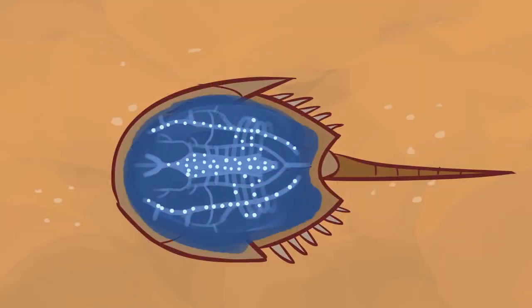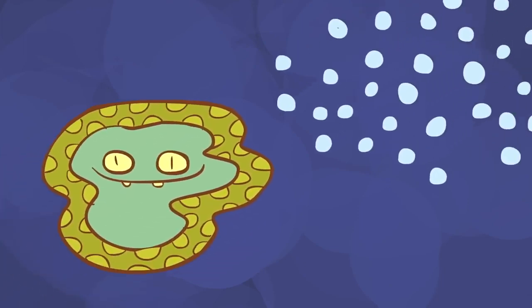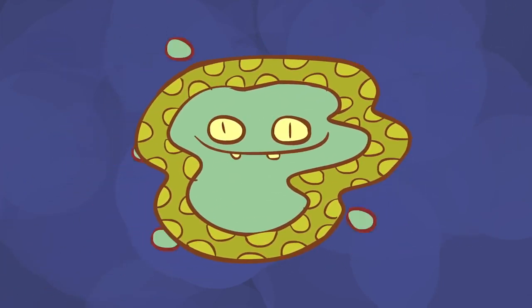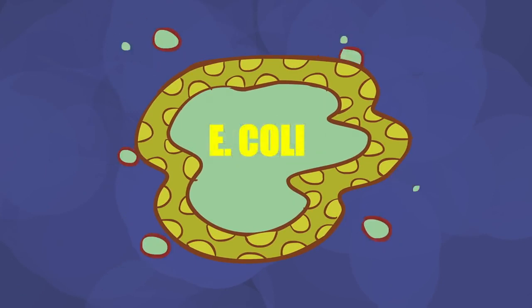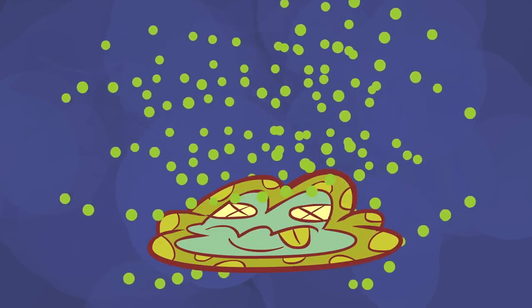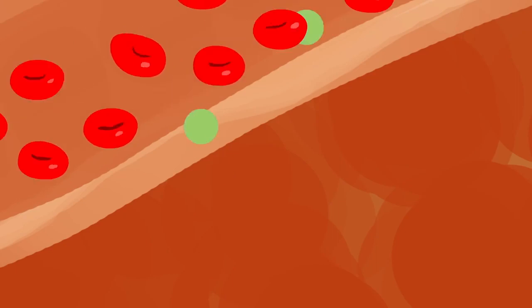But horseshoe crab amebocytes are exceptionally sensitive to bacterial endotoxins. Endotoxins are molecules from the cell walls of certain bacteria, including E. coli. Large amounts of them are released when bacterial cells die, and they can make us sick if they enter the bloodstream.